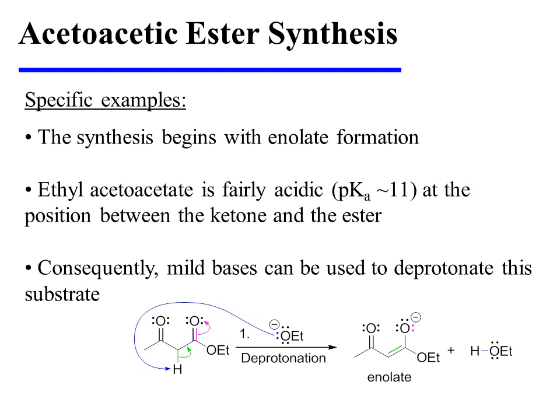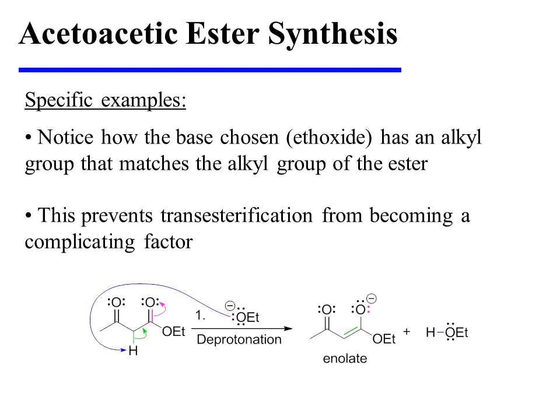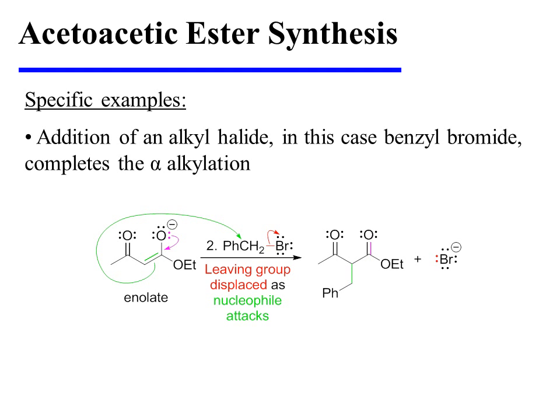Consequently, mild bases can be used to deprotonate this substrate. Notice how the base chosen, ethoxide, has an alkyl group that matches the alkyl group of the ester. This prevents transesterification from becoming a complicating factor. Next, addition of an alkyl halide — in this case benzyl bromide — completes the alpha-alkylation.